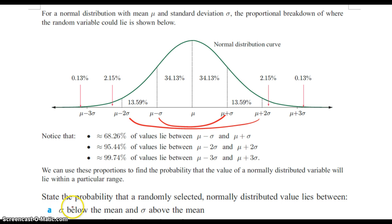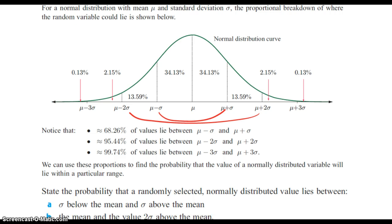For example, if we want to state the probability that a randomly selected, normally distributed value lies one sigma below the mean and above the mean, the probability is within this area, which as it says right here is 68.26 percent.